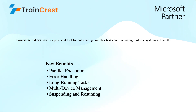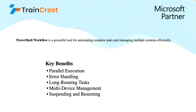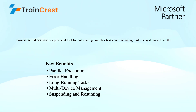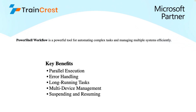PowerShell workflow is a powerful tool for automating complex tasks and managing multiple systems efficiently. PowerShell workflows are used to perform operations in parallel, unlike PowerShell scripts which execute in sequence and complete all commands or functions one by one, whether they have a dependency or not. PowerShell workflow can execute two activities in parallel, helping save time for long-running jobs — you don't have to wait for the first job to complete before moving to the other if they don't have a dependency. If they do have a dependency, you can execute them in sequence as well.